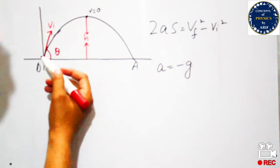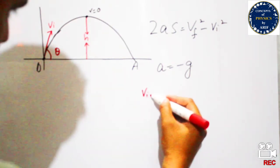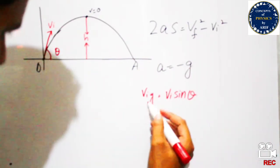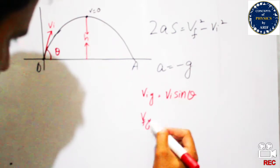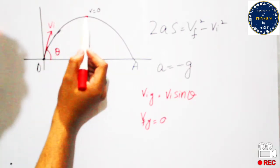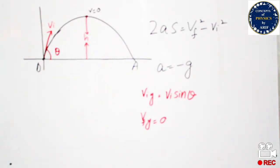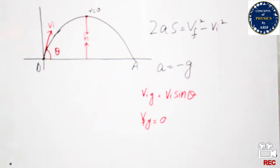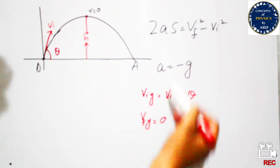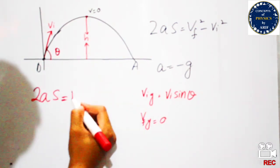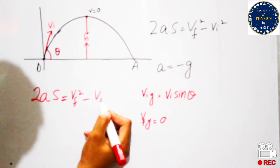In this case, initial velocity will be Vi_y = Vi sine theta, and final velocity will be Vf_y = 0, because at maximum height velocity will be 0. So at maximum height the body stops, and we need to find the maximum height of the projectile motion. We put these conditions into the equation, giving S = Vf² minus Vi².